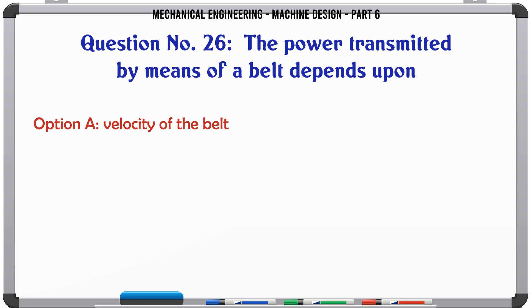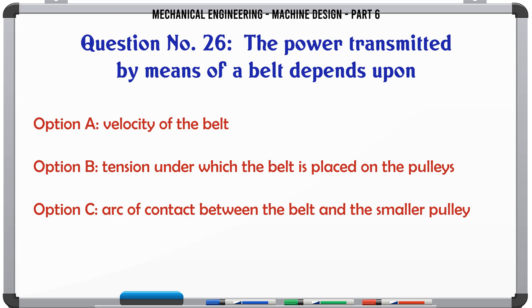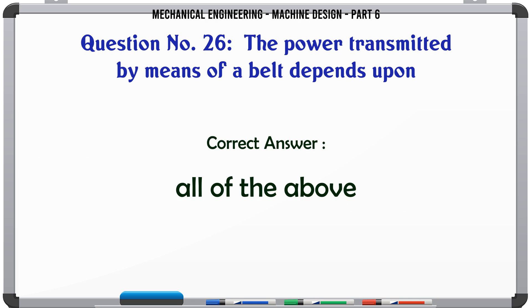The power transmitted by means of a belt depends upon: A) velocity of the belt, B) tension under which the belt is placed on the pulleys, C) arc of contact between the belt and the smaller pulley, D) all of the above. The correct answer is all of the above.